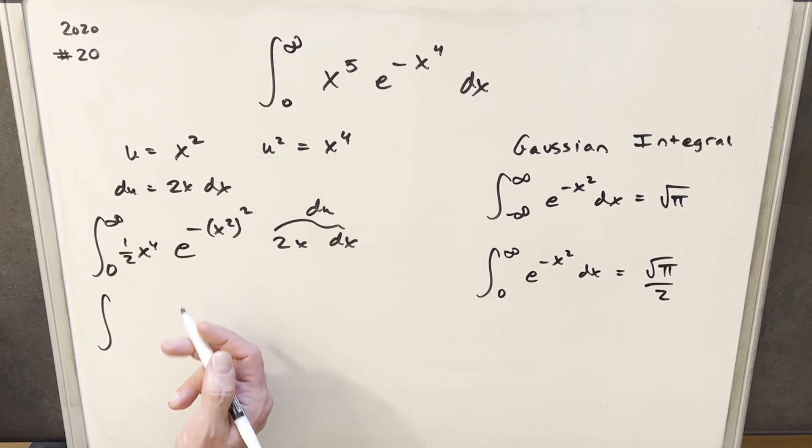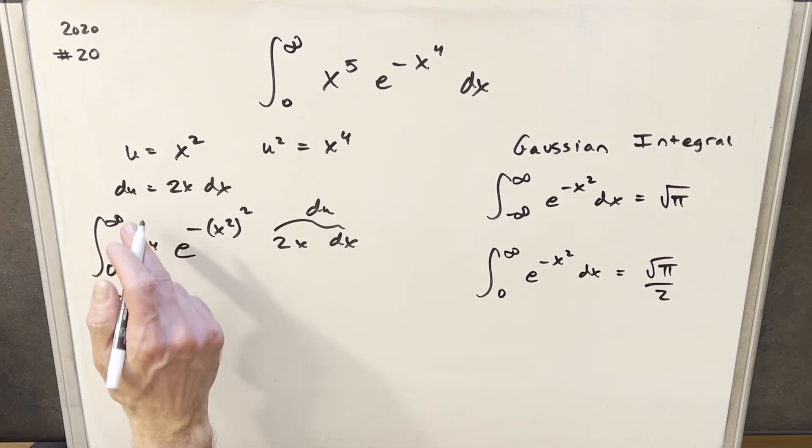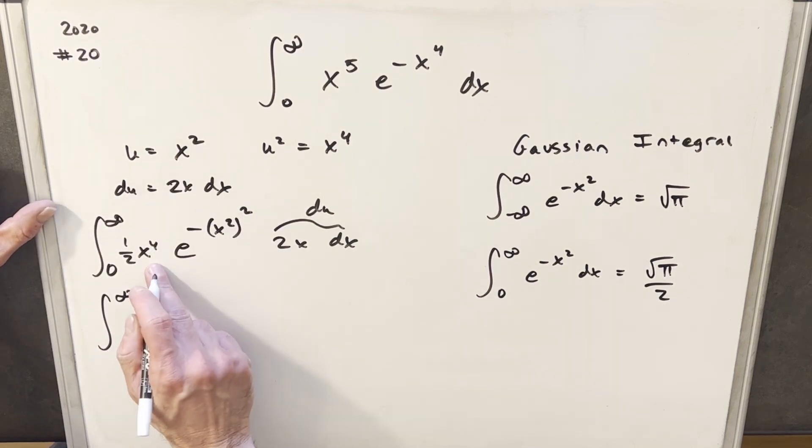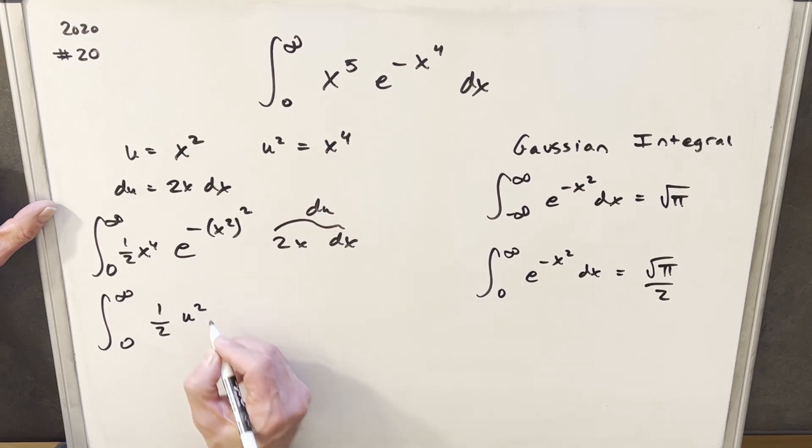So plugging infinity in for x squared we're gonna have just infinity and plugging in zero we'll have zero. Then next we'll have our one half. Our x to the fourth we know is u squared. Okay and then we're gonna have e minus this is u so we're gonna have a minus u squared du. Okay so what am I doing this? We're gonna do integration by parts and we're gonna use the tabular method.